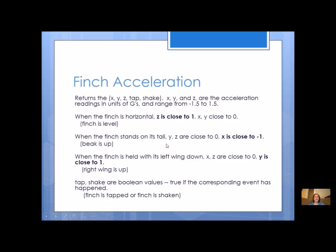Acceleration is always going to return these five values, so whenever you call the acceleration method you have to assign it to five variables, otherwise you're going to get errors. After you get the five values you can then take any one or two of them that you want to use, but whenever you call acceleration you must assign it to five values.